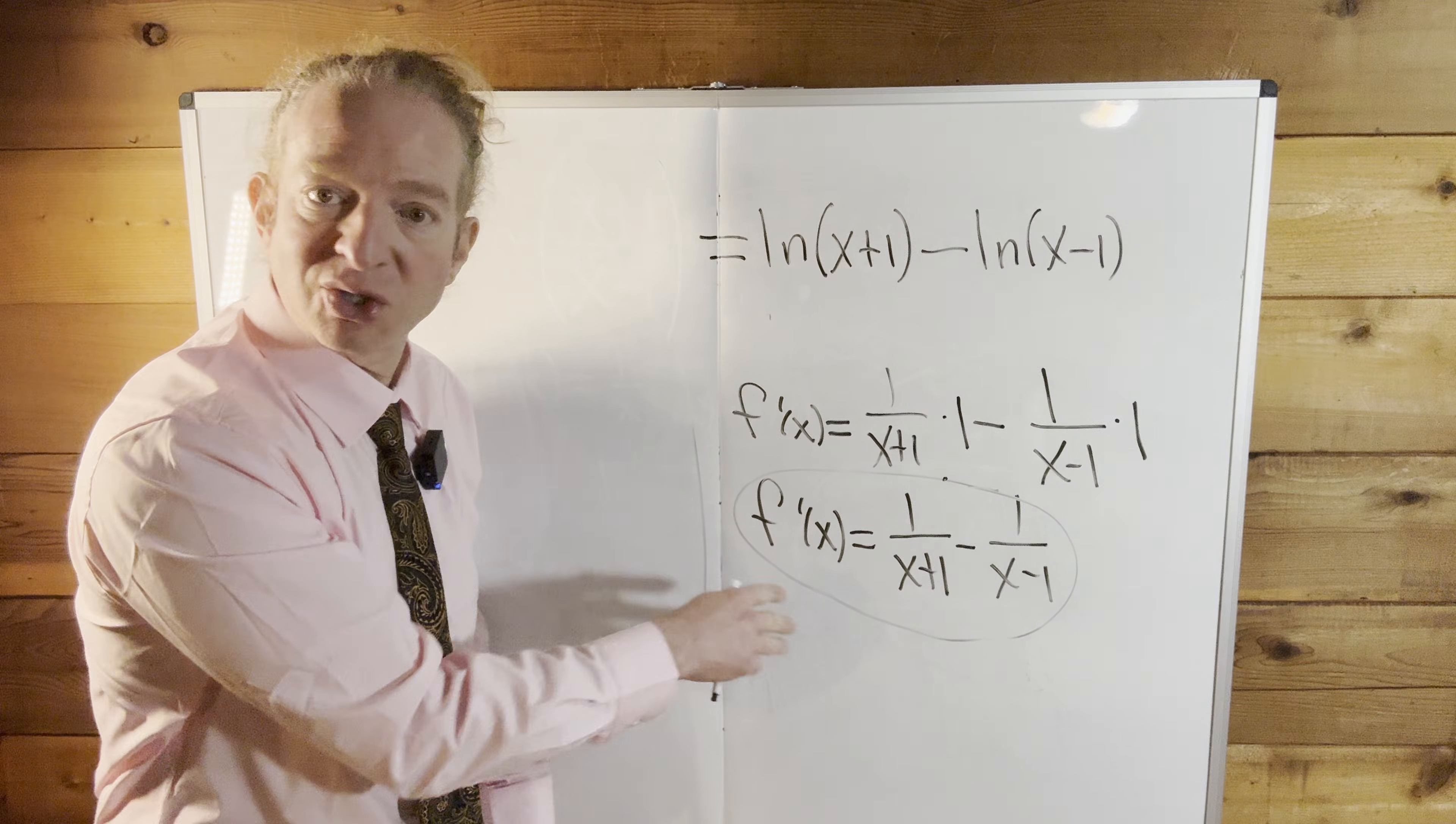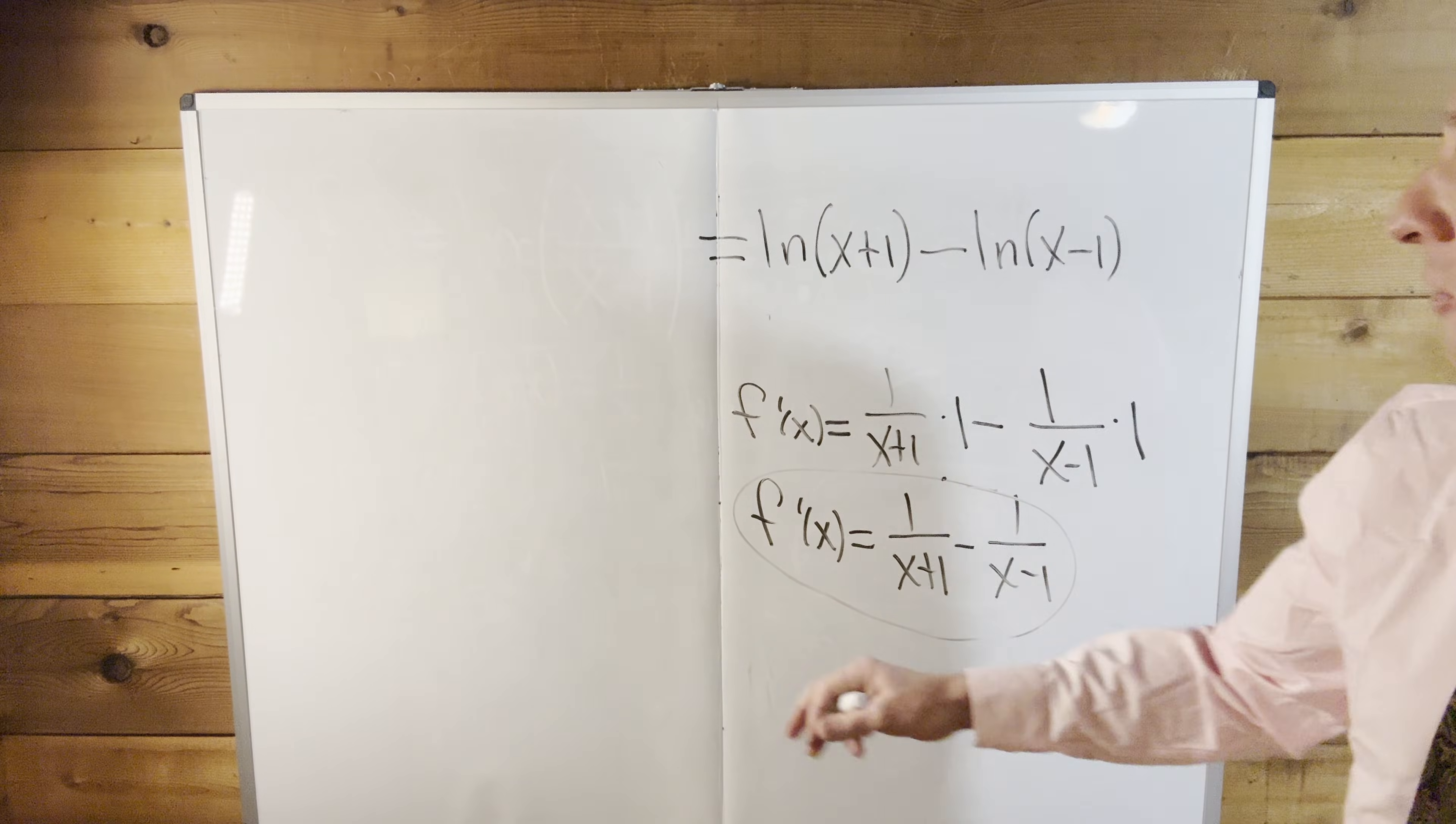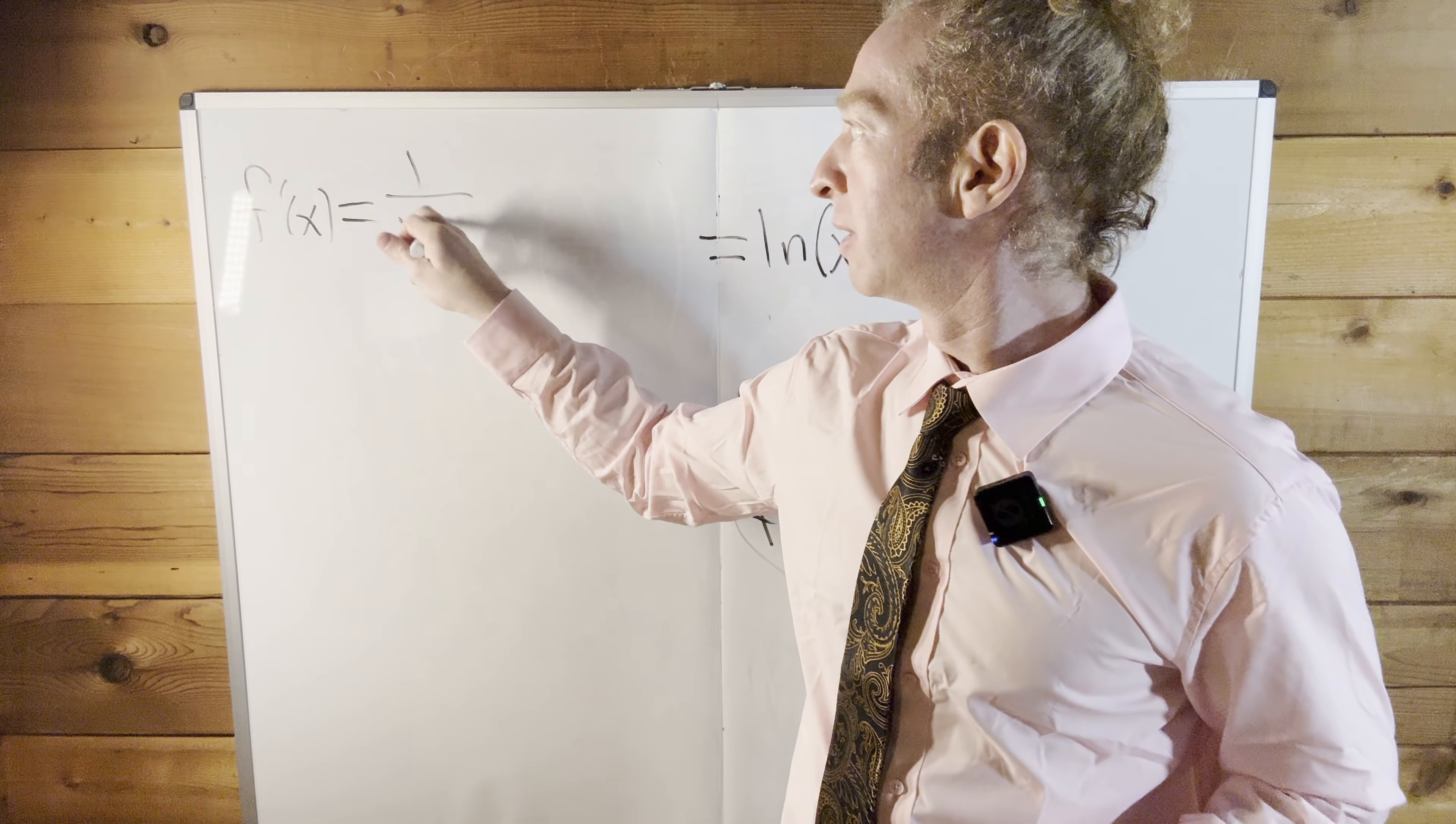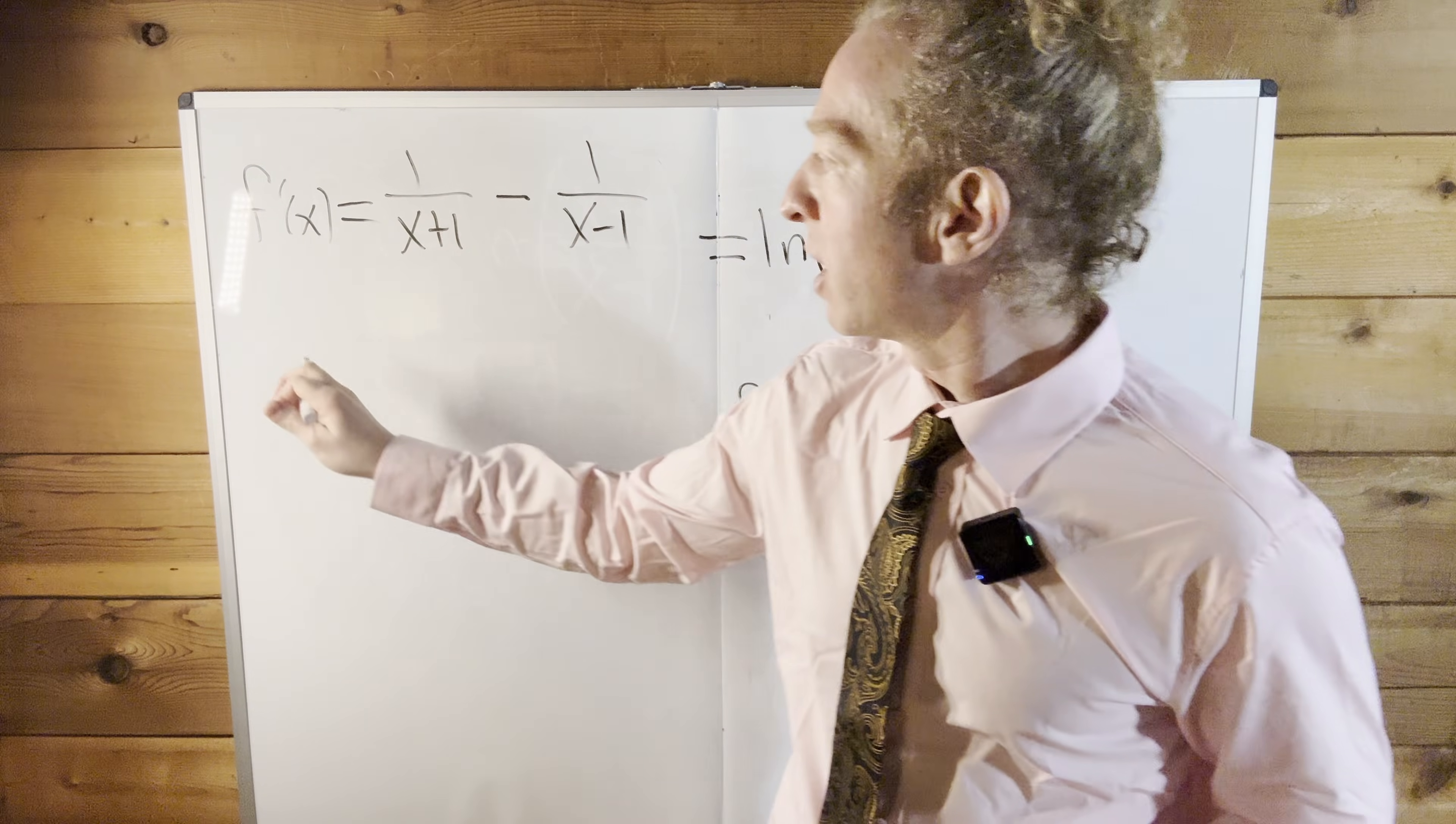So you could leave it like this, you could certainly leave it like this. But I just want to show you what if you wanted to combine it into a single term. Let me show you how to do that. f prime of x is equal to 1 over x plus 1 minus 1 over x minus 1.